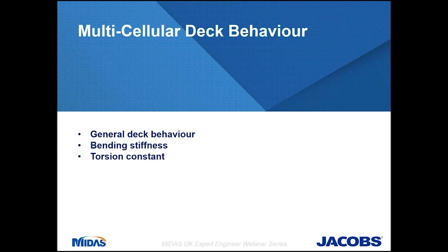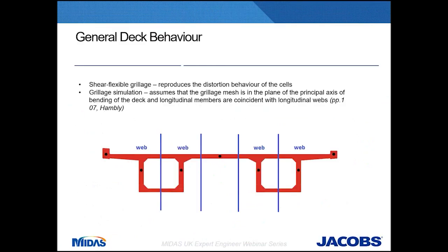Now let me introduce the theory behind multi-cellular deck behaviour adopted in this scheme. I will talk about general deck behaviour, bending stiffness and torsion constant — the two parameters that were varying throughout the scheme. When creating a grillage model in MIDAS Civil we considered a shear flexible grillage which reproduces the distortion behaviour of the cells. The grillage mesh is assumed to be in the plane of the principal axis of bending of the deck, and longitudinal members are coincident with longitudinal webs.